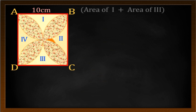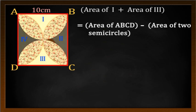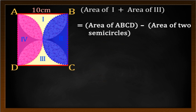Area of 1st plus area of 3rd is equal to area of ABCD minus area of 2 semicircles, each of radius 5 cm.